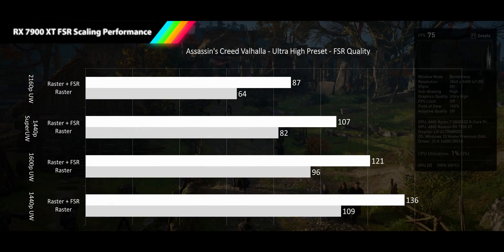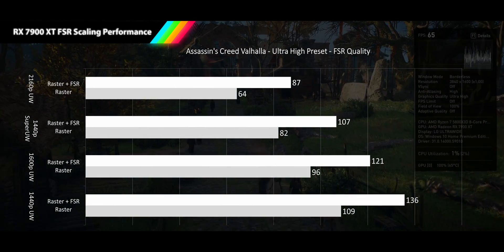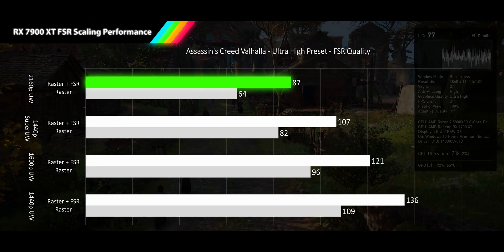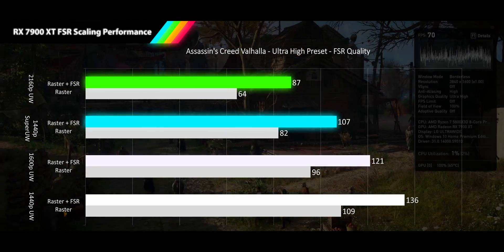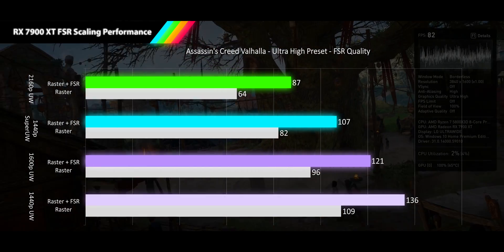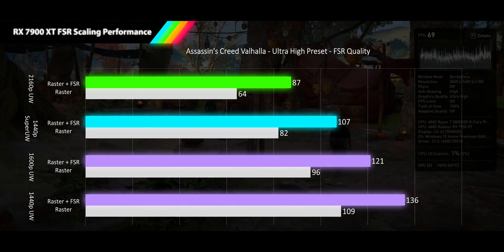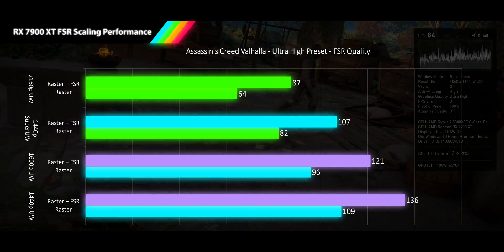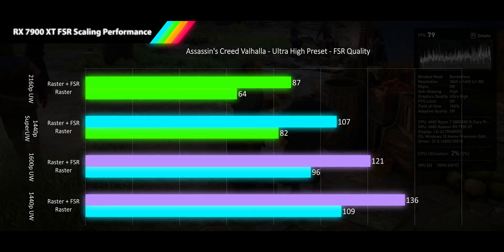Our first game is Assassin's Creed Valhalla, where FSR provides some solid scaling: 4K ultrawide increasing 36%, 1440p super ultrawide 30%, 1600p ultrawide at 26%, and 1440p ultrawide at 25%, moving all but 4K ultrawide into the next tier of performance, making for a buttery smooth experience at all resolutions.